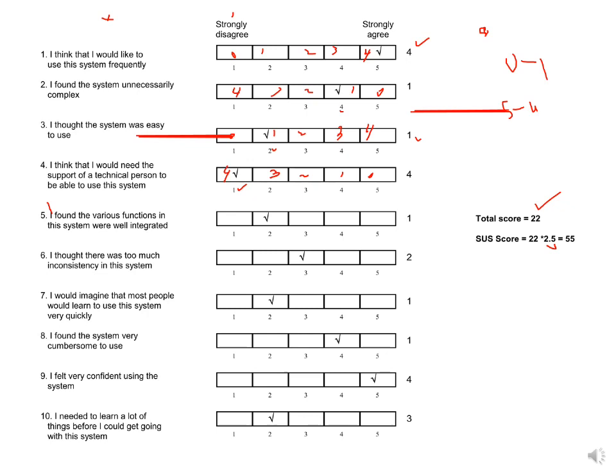For example, if a user selects 1, the calculated value will be 4. This is how the SUS is calculated. If you still have doubts, please watch the previous video.